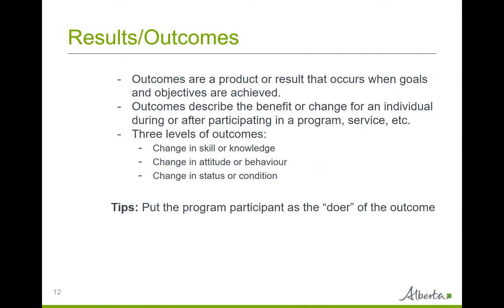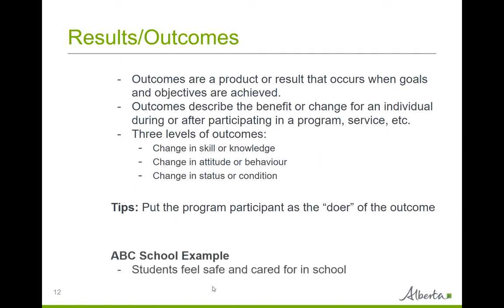We're going to talk about evaluation in a few slides. By developing your own outcomes, you can clearly explain how your outcomes align with those of the funders. A useful tip: put the program participant as the doer. For example, going back to the ABC school scenario, a potential outcome could be: students feel safe and cared for in school. The students are the doers and the focus of this outcome, and this example demonstrates an outcome in the status or condition of the participants — they will now feel safe.